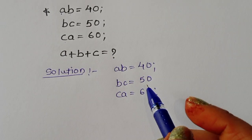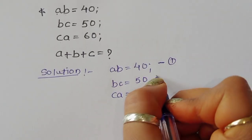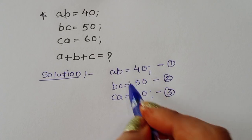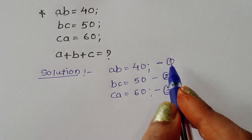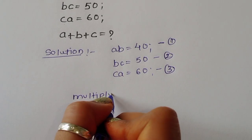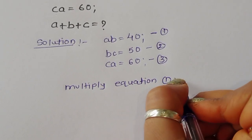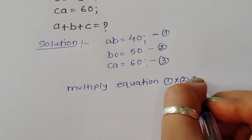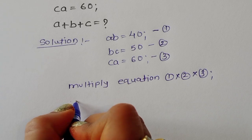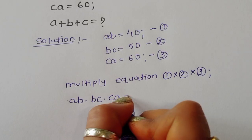We are given these values, so we label them equation one, equation two, and equation three. We have to multiply equation one, two, and three together.